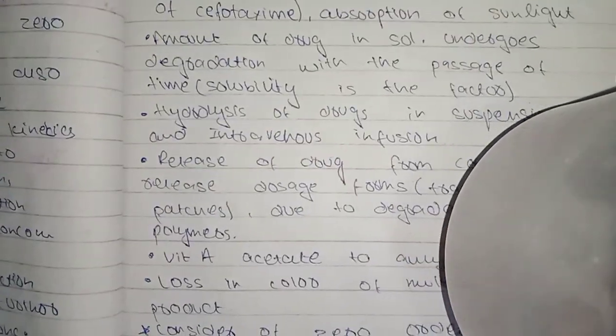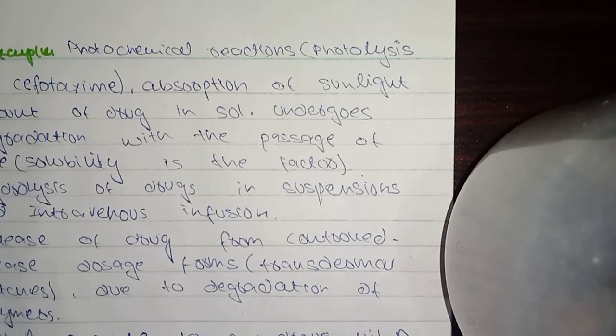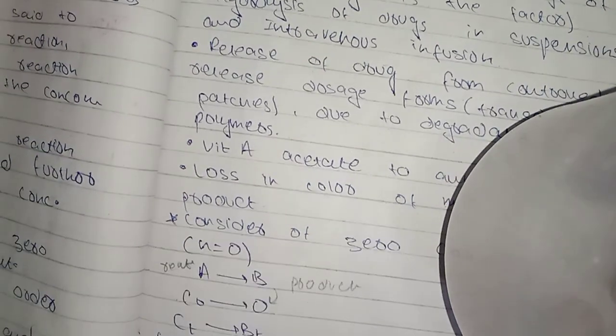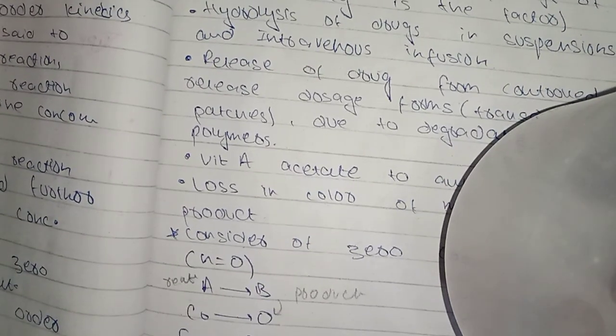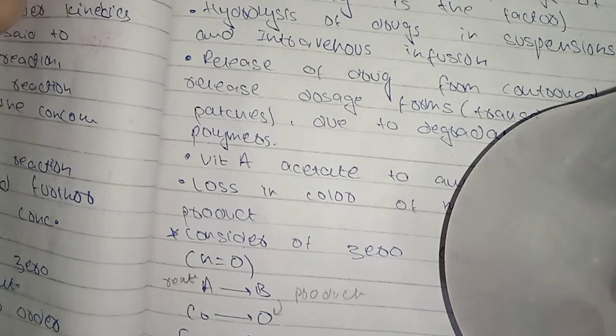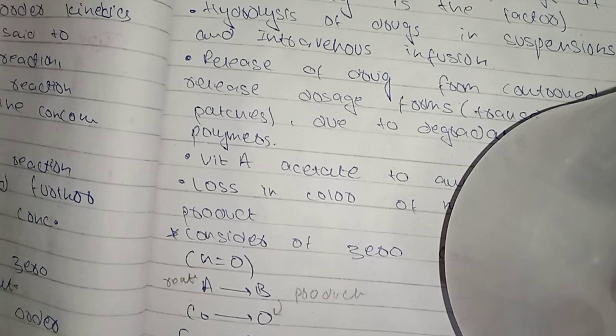We have some examples. The first example is photochemical reactions such as photolysis and absorption of sunlight. Another example is an amount of drug in solution undergoing degradation with the passage of time. Also, hydrolysis of a drug in suspension or IV infusion is also a zero order example.